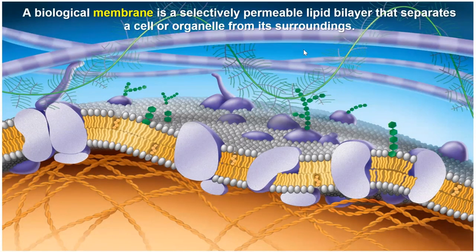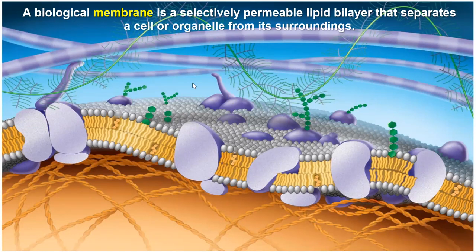A typical textbook definition of a biological membrane describes it as a semi-permeable layer — a bilayer that separates the cell from its surroundings. The semi-permeable part means it allows things in and out, so a big part of membranes is transporting molecules — wastes out, nutrients in.